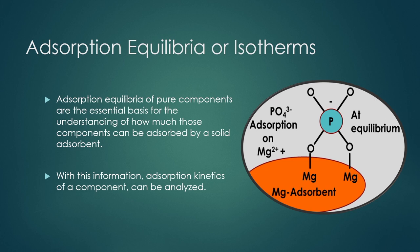Adsorption equilibria of any pure components are the essential basis for understanding how much those components can be adsorbed by a solid adsorbent. This is the basic key parameter for understanding how much compound can be adsorbed on solid surfaces. With this information — adsorption equilibria or isotherms — adsorption kinetics of a component can also be analyzed.